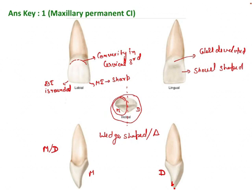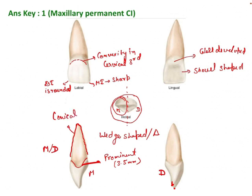If you see the cervical curvature on the mesial side, it is very prominent — even more prominent than any other tooth in the oral cavity. This curvature can be as deep as 3.5 mm. The root is conical and generally narrow on the palatal side. Mesio-distally the root is quite wide, but labio-lingually or from the palatal aspect it will be narrow.